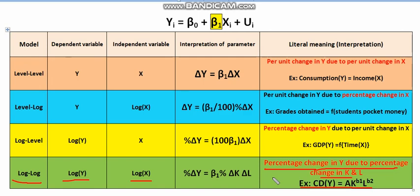When we take the log of both variables, we interpret the result as the percentage change in Y due to the percentage change in X — in this case, capital and labor. You simply have to remember: when we take the log, it no longer becomes the per unit change; it is transformed to a percentage change. So here we say: one percent increase in output is affected by one percent increase or decrease in capital and labor inputs. That is how you should interpret when you take the log values, transforming your raw data into a functional form of regression and using it to analyze data with a multiple regression model.